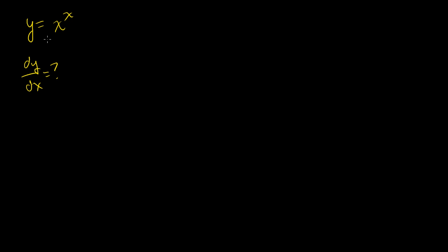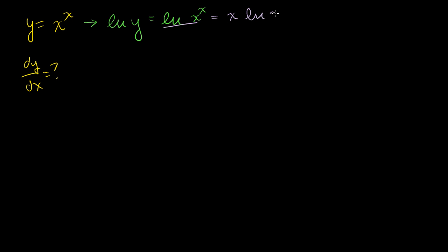The trick is to take the natural log of both sides of the equation. If you take the natural log of both sides, you get the natural log of y is equal to the natural log of x to the x. Our natural log rules say that the natural log of x to the x can be rewritten as x times the natural log of x. So we get: the natural log of y is equal to x times the natural log of x.